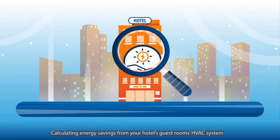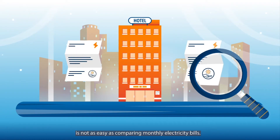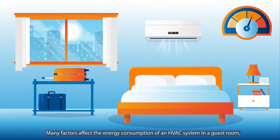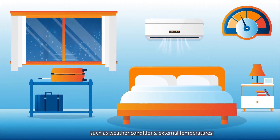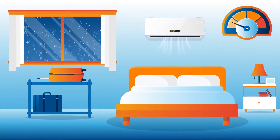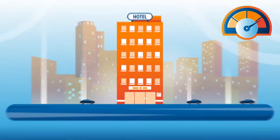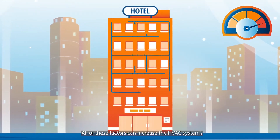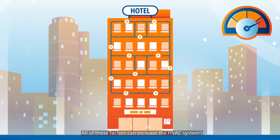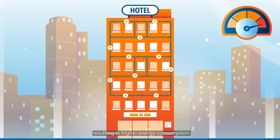Calculating energy savings from your hotel's guest room's HVAC system is not as easy as comparing monthly electricity bills. Many factors affect the energy consumption of an HVAC system in a guest room, such as weather conditions, external temperatures, humidity levels, guests' AC preferences, and occupancy levels. All of these factors can increase the HVAC system's need to cool or heat a guest room, resulting in higher energy consumption.